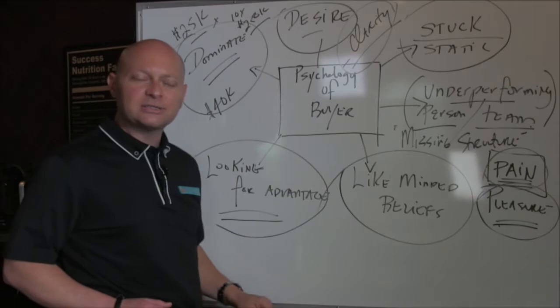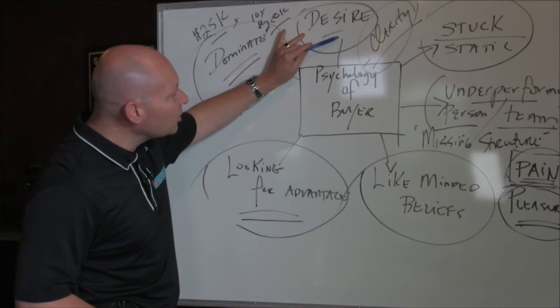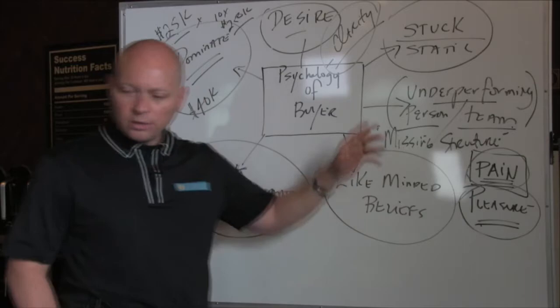They want to dominate. If a person pays $25,000, we can get them a $250,000 increase. That's getting them to a much better state. They've got a desire, they're looking for clarity, they've got a desire to do something in their life.